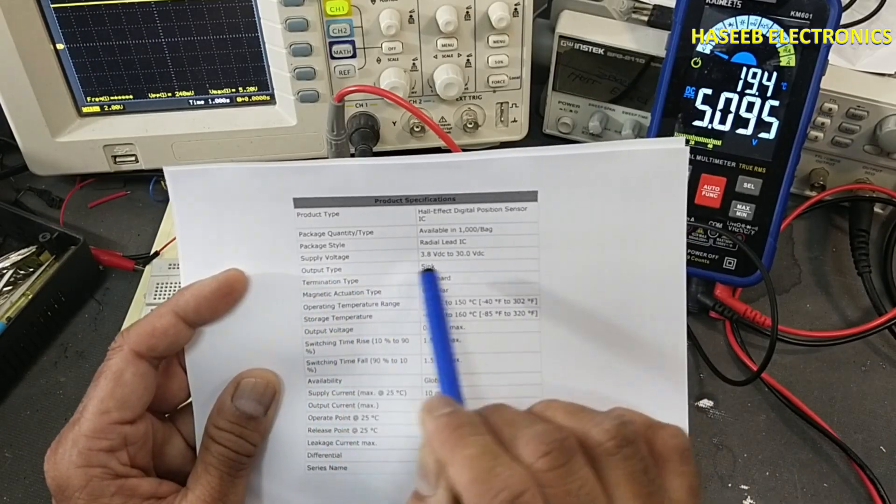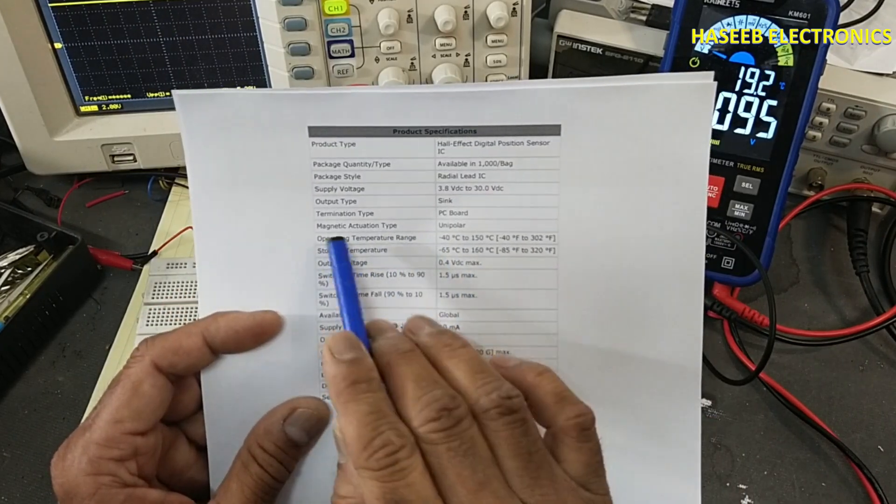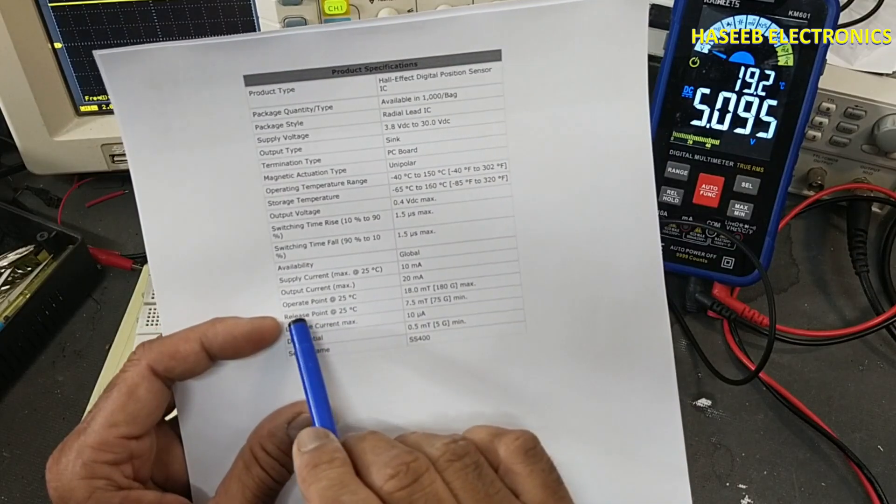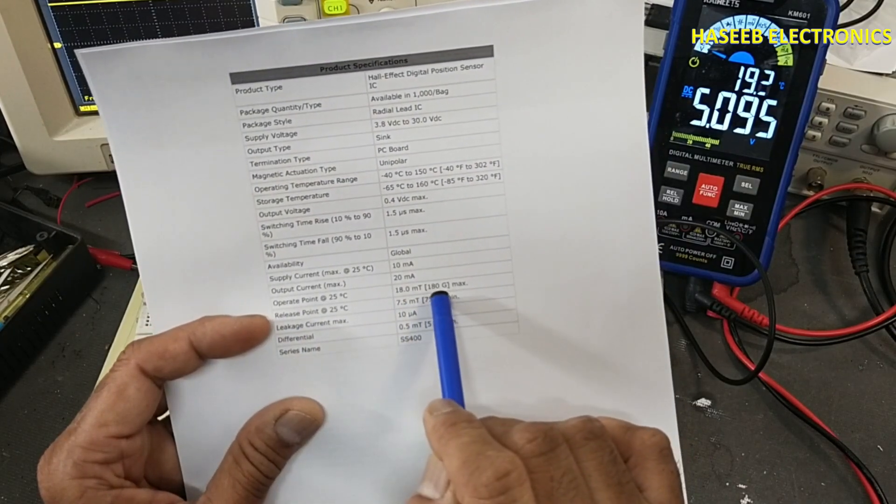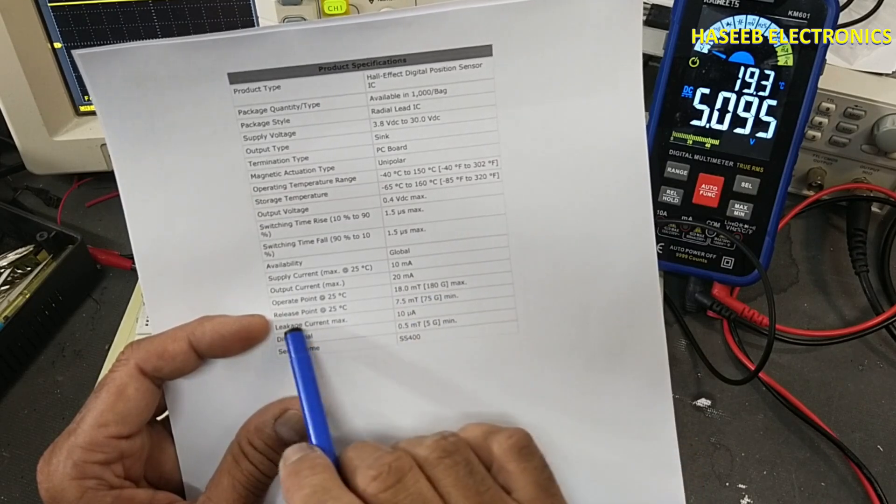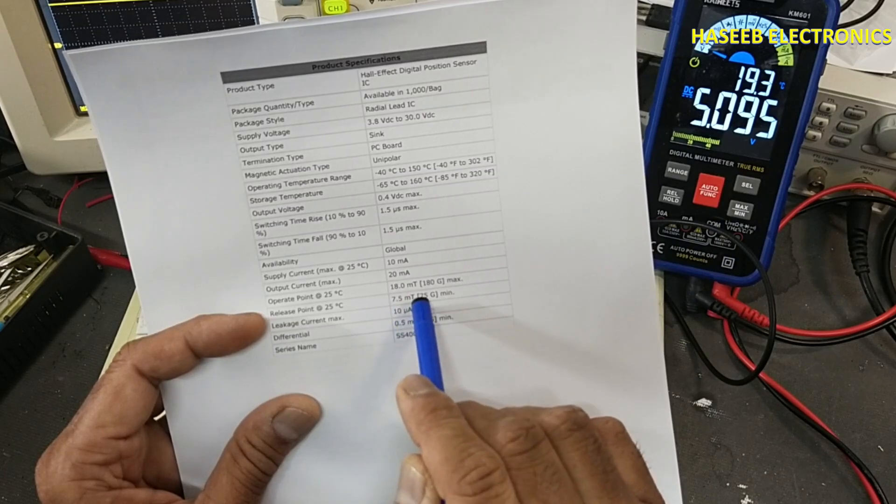Supply voltage 3.8 volt to 30 volt DC and unipolar magnet. Supply current 10 milliampere. Operating point 18 millitesla or 180 gauss maximum. Release point, the minimum magnetic flux, that is 7.5 millitesla or 75 gauss.